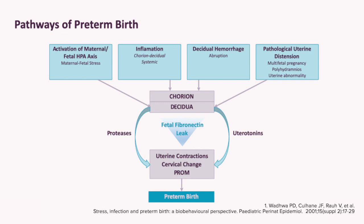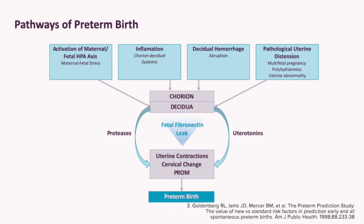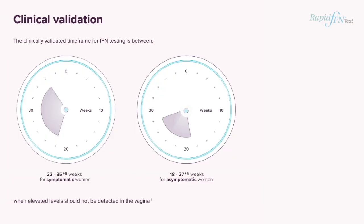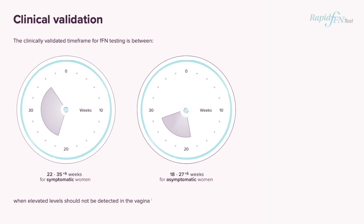Fetal fibronectin is effective at assessing the risk of preterm labour, as it is found in the four main causative pathways of preterm labour. Within these pathways, fetal fibronectin leakage occurs prior to cervical length change. This is due to it being a biochemical marker, rather than biophysical. In the UK, fetal fibronectin is validated for use within two groups of patients: between 22 and 35 plus 6 weeks for symptomatic women, and between 18 and 27 plus 6 weeks for asymptomatic women with risk factors for preterm birth.